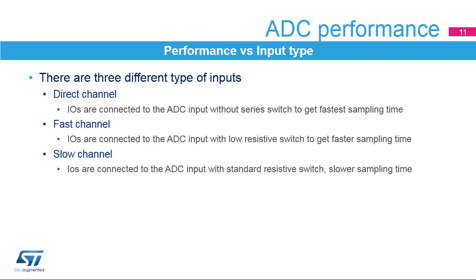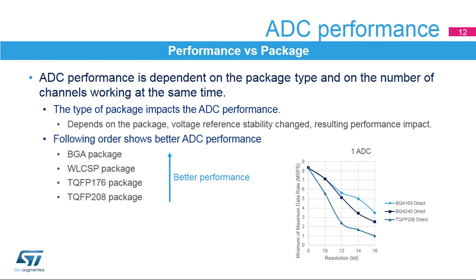There are three different types of inputs. Direct channel, where IOs are connected to the ADC input without a series switch to get the fastest sampling time. Fast channel, where IOs are connected with a low-resistive switch for faster sampling time. And slow channel, where IOs are connected with a standard resistive switch for slower sampling time. ADC performance is dependent on the package type and the number of channels working simultaneously; BGA package technology offers better performance, especially at high resolution.